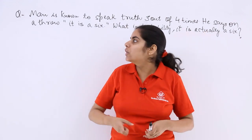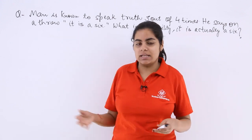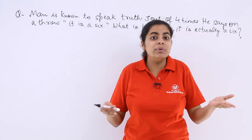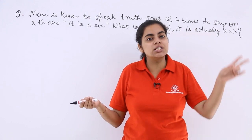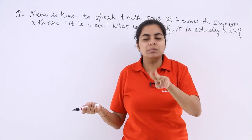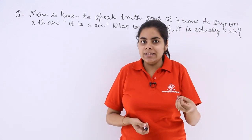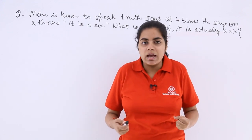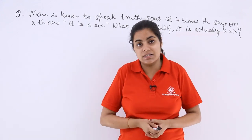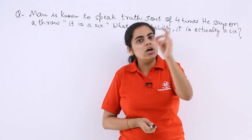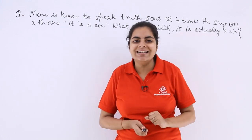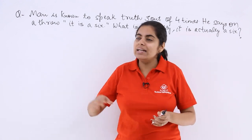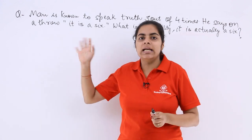Now, on a throw of a die, he says it is a 6. When the die was thrown, he said it is a 6. There are 2 possible cases here: it can happen that it actually was a 6 and he spoke the truth saying yes it is a 6, or it can happen that there was not a 6 and he was speaking a lie, which is why he said it is a 6.